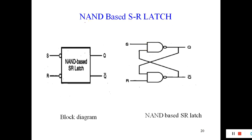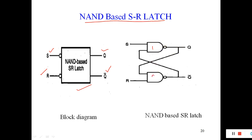The SR latch is made up of cross-coupled NOR gates or NAND gates. I am going to discuss the NAND-based SR latch. This is the block diagram: S, R, Q, and Q-bar. This is the internal structure — set and reset inputs are cross-coupled through NAND gates. Cross-coupled means the output of gate one feeds back to the input of gate two, and vice versa.